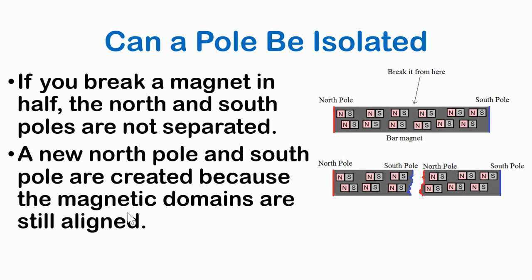The last thing we're talking about is: can you isolate a north pole or a south pole? Imagine you had a magnet and broke it right in the middle — would the left side be only a north pole and the right side only a south pole? Could you have just a north pole magnet? No, you can't. If you break a magnet in half, the north and south poles are not separated. A new north pole and a new south pole are created because the magnetic domains are still aligned. The little tiny magnets inside are still frozen in that same orientation, and what you end up with is just a weaker magnet — you just broke it in half, and now you have two magnets.